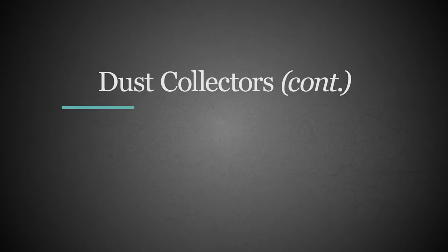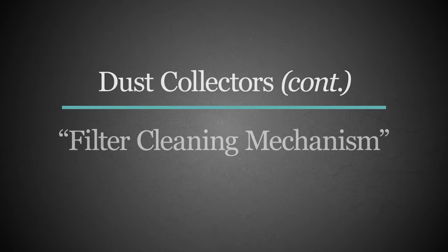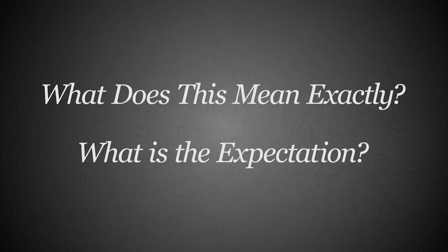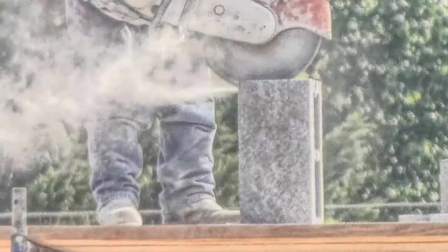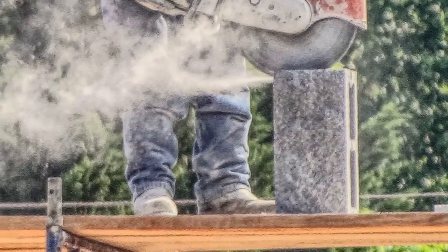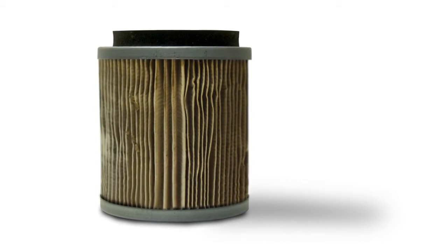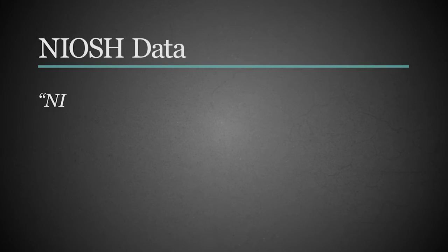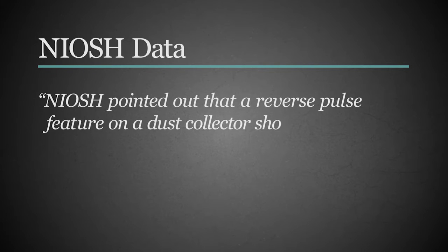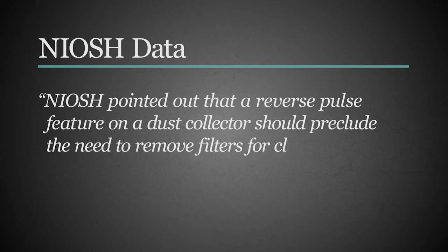Now let's look at the second part of the requirement: that the dust collector be equipped with a filter cleaning mechanism. A filter cleaning mechanism could mean a lot, so we need to look at what the expectation may be behind this statement. We turn to the body of the text, where OSHA quickly discovered that the fine dust most materials produce would quickly clog standard vacuums. NIOSH pointed out that a reverse pulse feature on a dust collector should preclude the need to remove filters for cleaning.